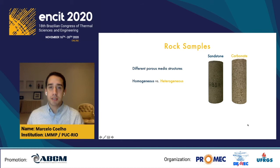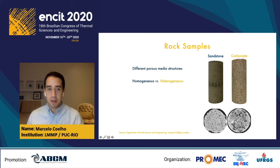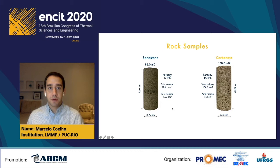Talking about the rock samples, we wanted two samples with different porous media structures — one homogeneous and one heterogeneous. So we chose a sandstone and a carbonate. Here we have two images from Imperial College showing cross-sections of each. In the sandstone, we can see small pores that are very well distributed in the sample. In the second image, we can see huge pores and small ones, which is a very heterogeneous porous media. The two samples have almost the same size and similar porosity; the sandstone has an absolute permeability of 86 millidarcy and the carbonate 106 millidarcy.